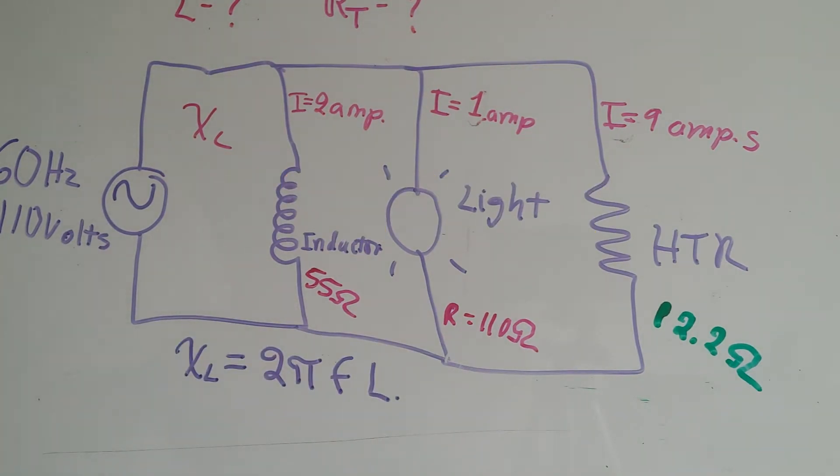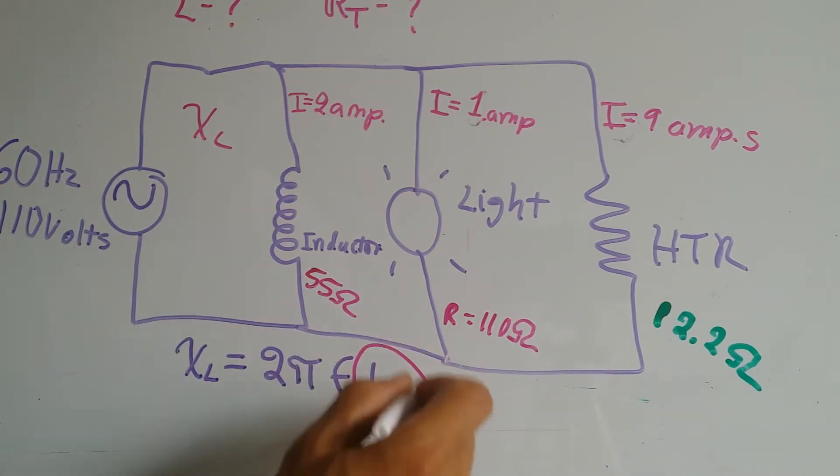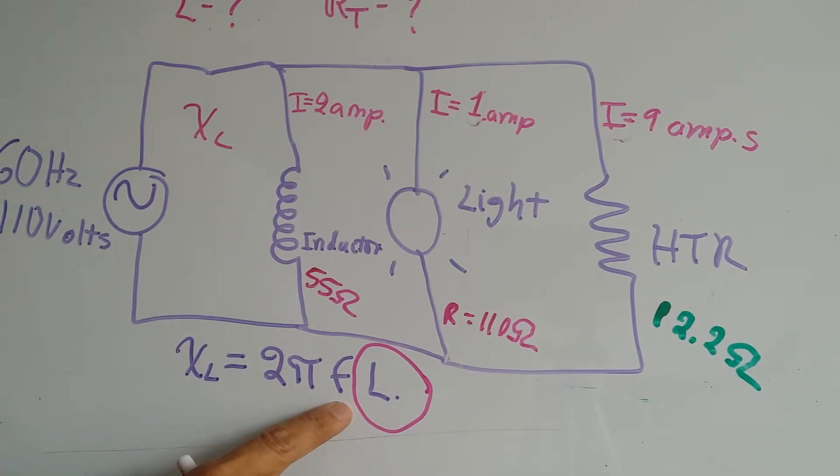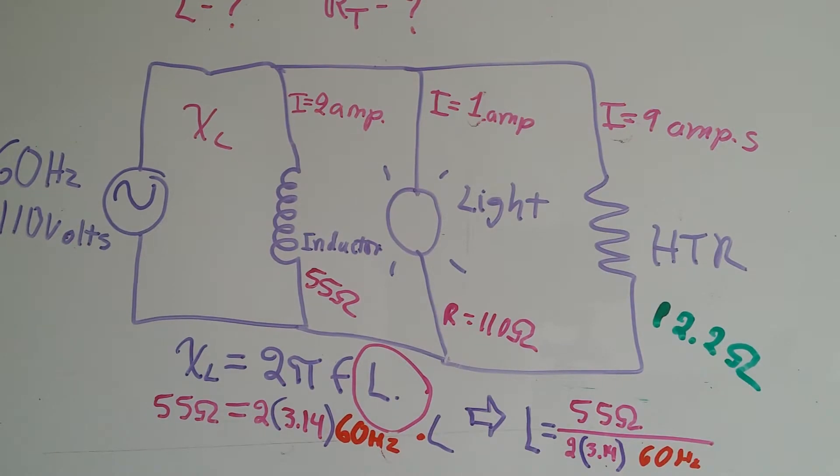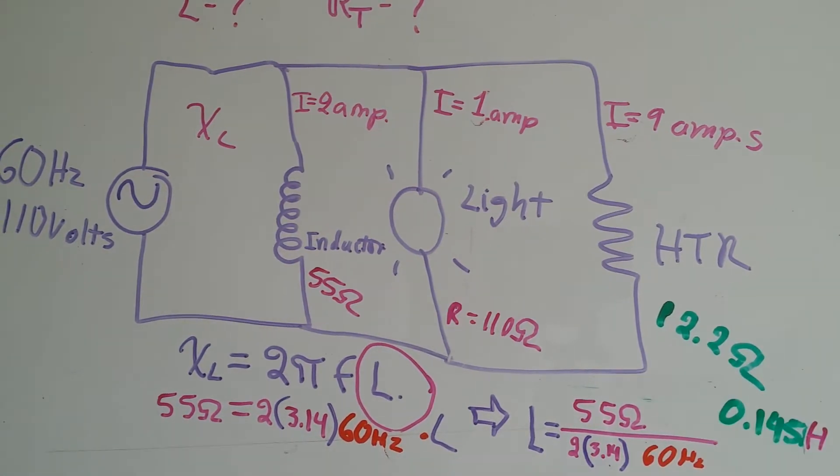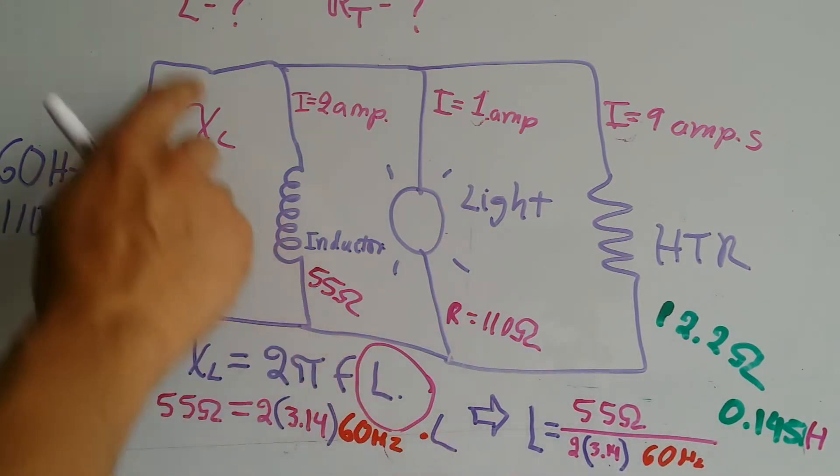But the calculations are not over yet. We still want to find out what the inductance is, and this is what we're looking for. We have the frequency which is common and we got the reactance which is 55 ohms. After replacing my values on the equation and rearranging the equation for L, I get the answer. For inductance, we end up with a value of 0.149, which is the answer for this.